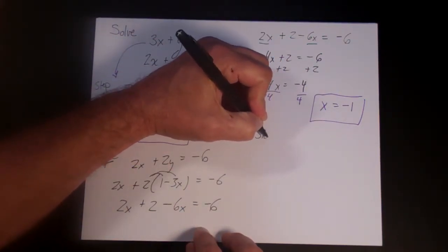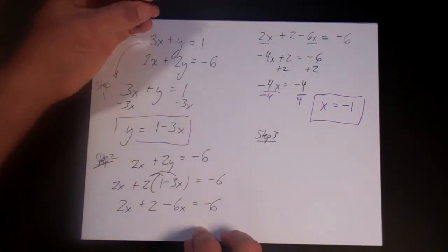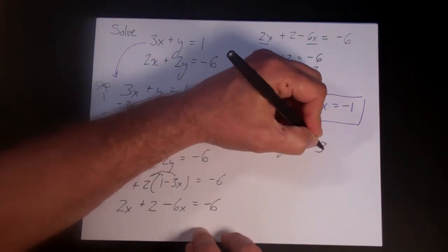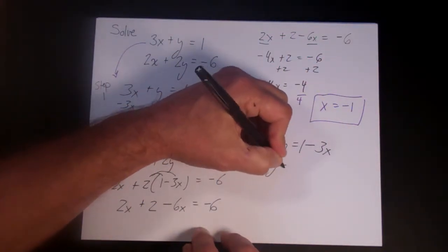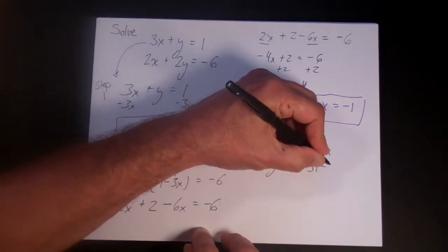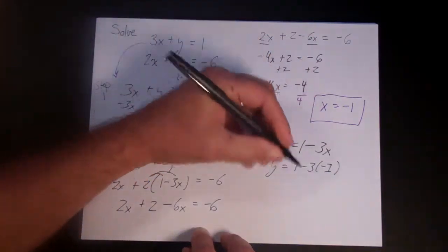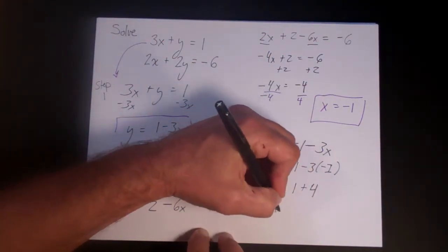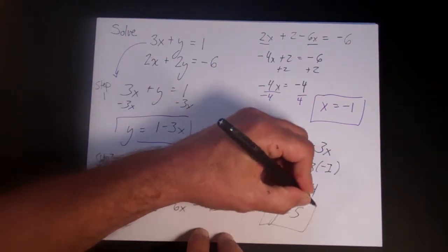So then in step 3, let's plug in y is equal to 1 minus 3x. x is minus 1. So y is equal to 1 minus 3 times minus 1, or y is equal to 1 plus 4, or y is equal to 5. And that's going to be your answer.